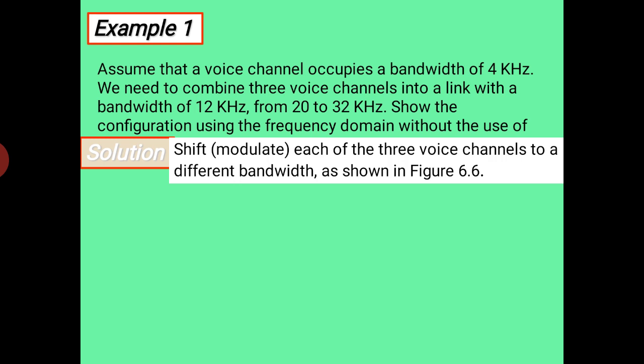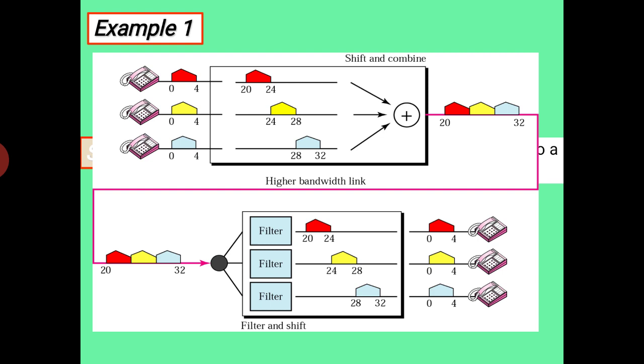The total bandwidth is 12 kilohertz, as individual devices need 4 kilohertz and there are 3 voice channels. The range is given from 20 to 32 kilohertz. We have to demonstrate this example with the help of a figure.